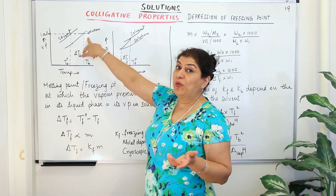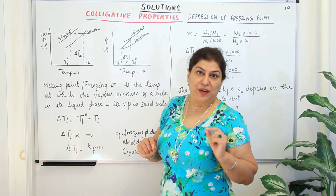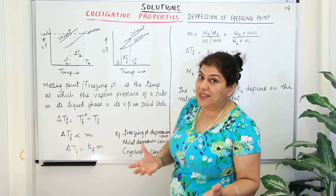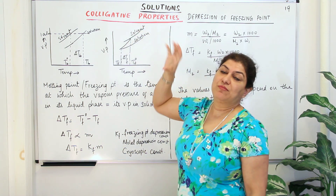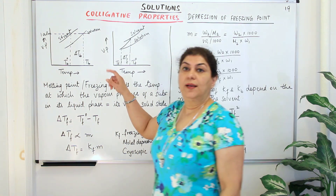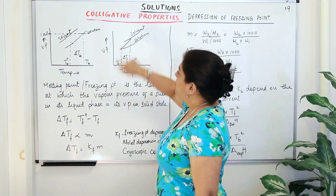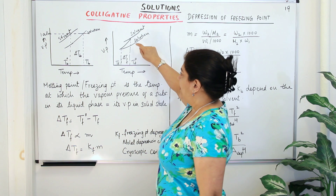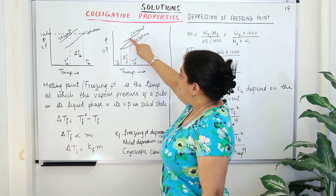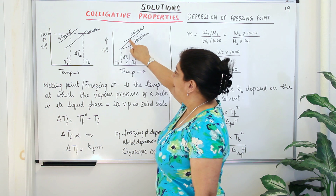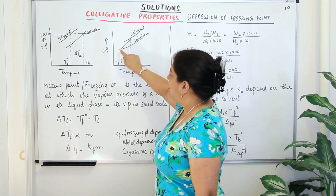Just as the boiling point is that temperature at which the vapor pressure of the liquid becomes equal to the atmospheric pressure, the freezing point is that temperature at which the vapor pressure of the liquid state becomes equal to the vapor pressure of the solid state. Look at this graph showing freezing. This is the curve for the pure solvent. At temperature T0F the solvent freezes, and as it freezes its vapor pressure decreases along the second curve.